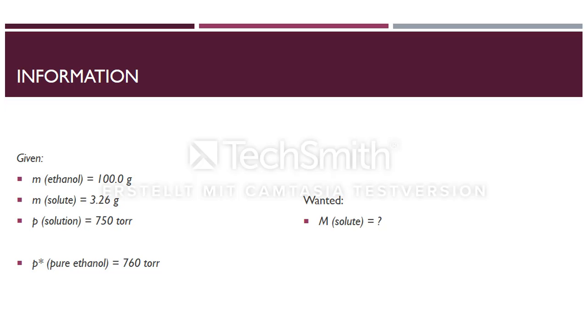Here you can see our information. Given is the mass of ethanol, which is 100 g, the mass of the solute, which is 3.26 g, the vapor pressure of the solution, which is 750 Torr, and you also have to look up the vapor pressure of pure ethanol, which is 760 Torr.